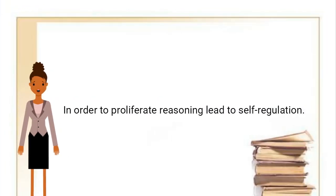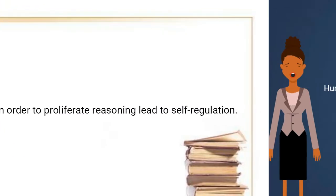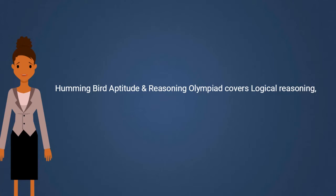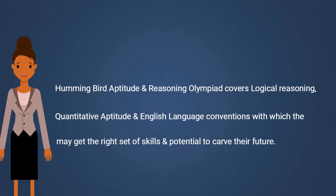In order to proliferate, reasoning leads to self-regulation. Hummingbird Aptitude and Reasoning Olympiad covers logical reasoning, quantitative aptitude, and English language conventions, which give students the right set of skills and potential to carve their future.